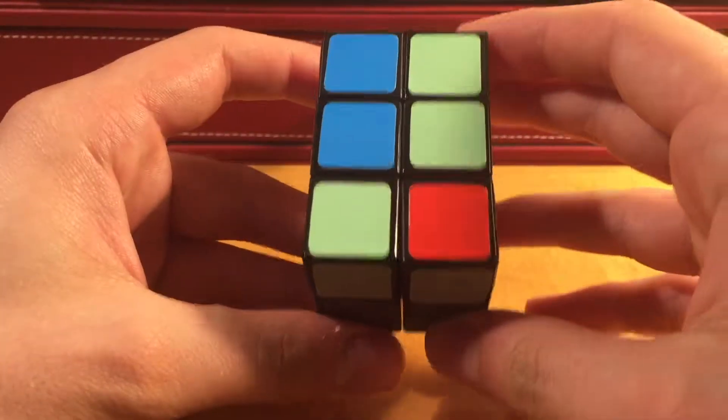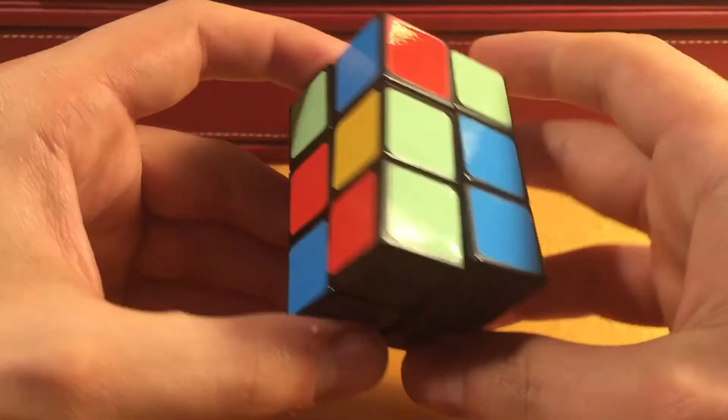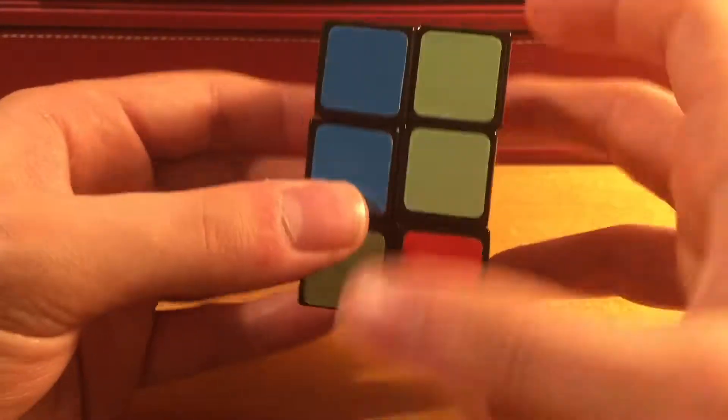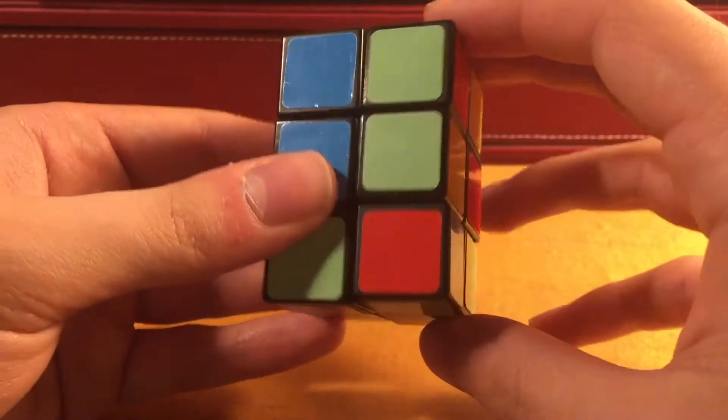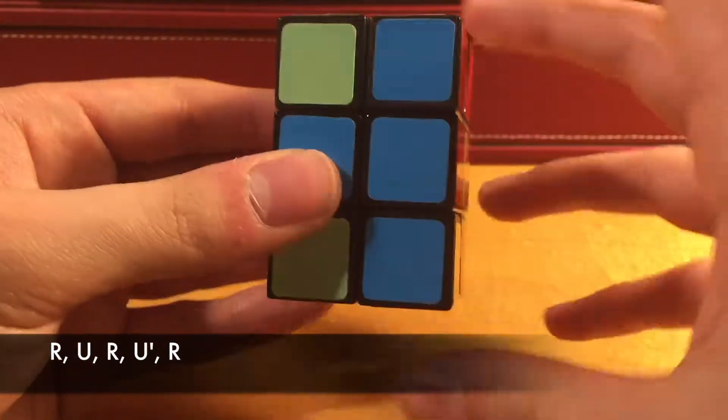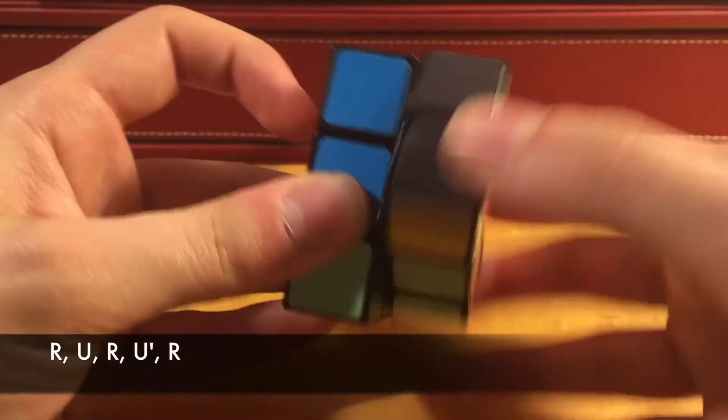Now, I would normally just do this, but that doesn't properly pair it, so there's a slight algorithm that you guys have to learn, and that would be R U R U' R, and that correctly inserts that corner piece.